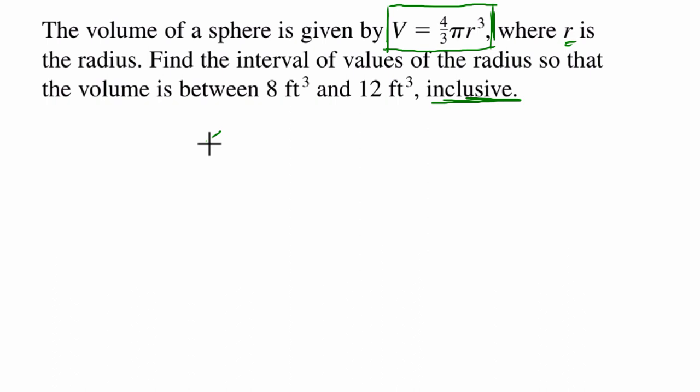So I'm going to say, all right, this volume v has got to be greater than or equal to 8 and less than or equal to 12. And then I'm going to just solve for r, because v is 4 thirds pi r cubed.